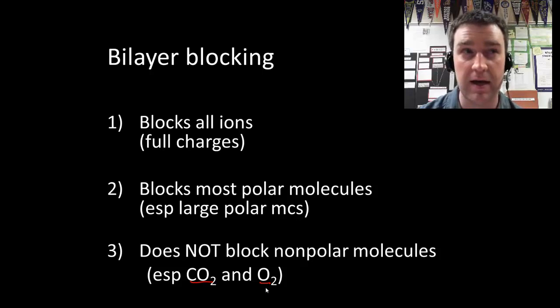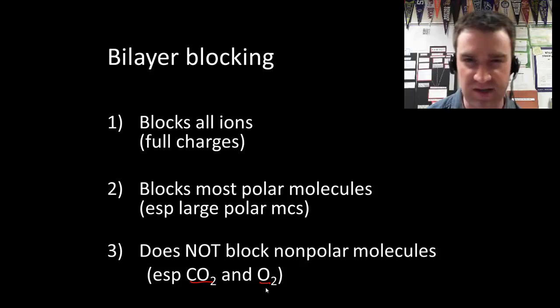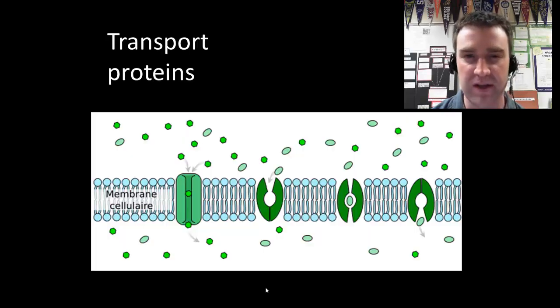A metaphor that I often use with my students is like a chain link fence. A chain link fence is very effective at blocking big things from crossing to the other side, but maybe little things like mosquitoes could still easily get across. So if the phospholipid bilayer is a very effective blocker, then the other aspect to selective permeability is selecting certain components to actually get through still.